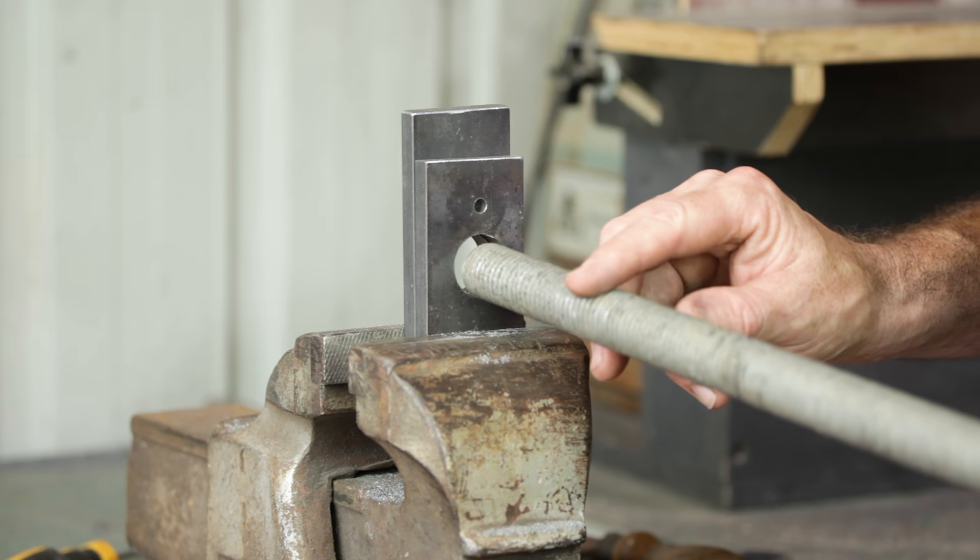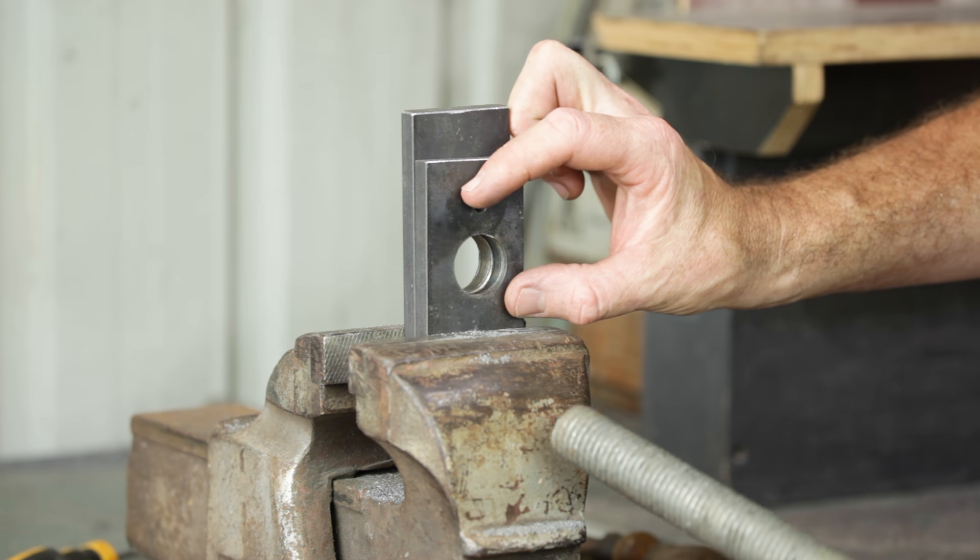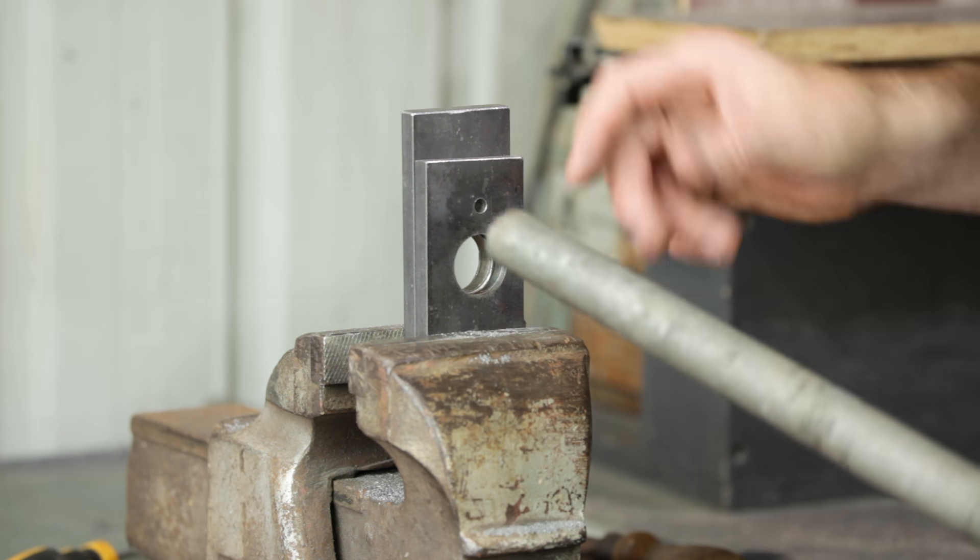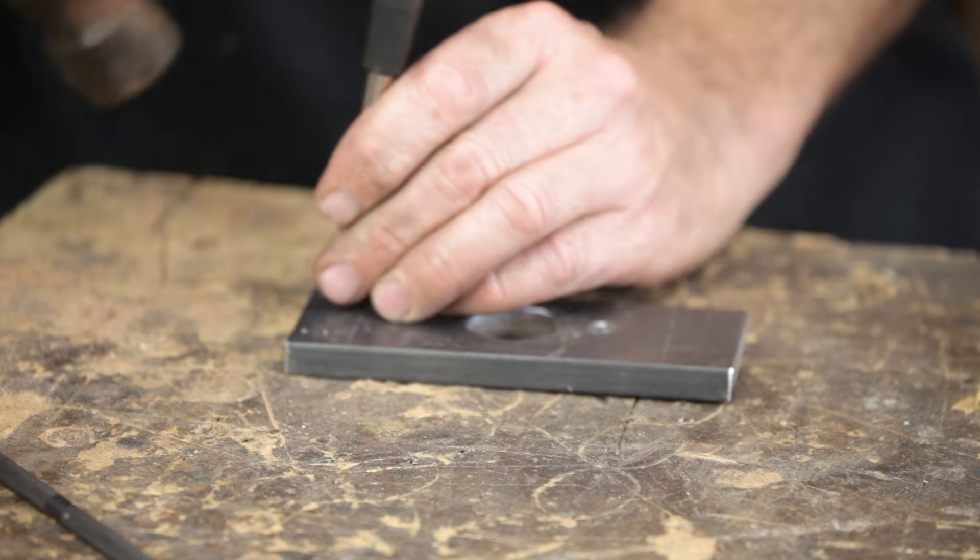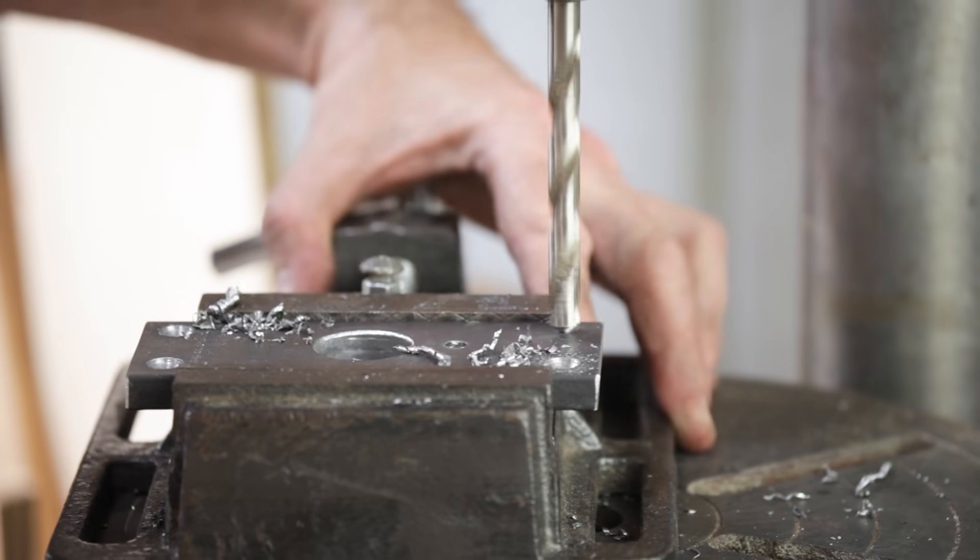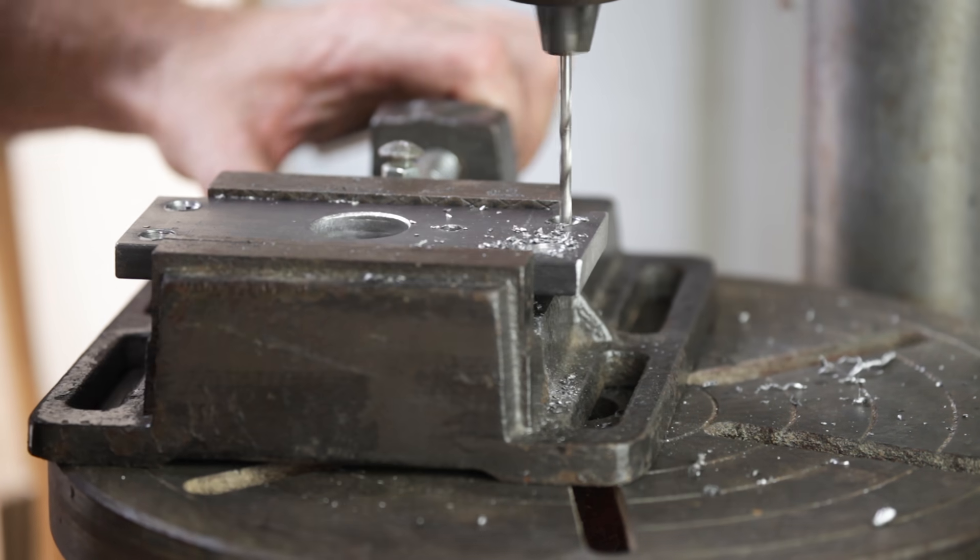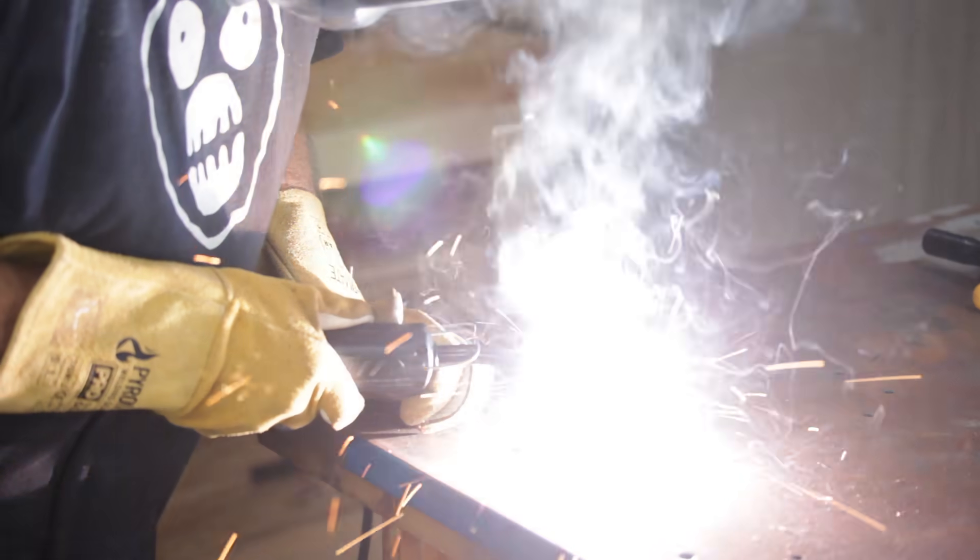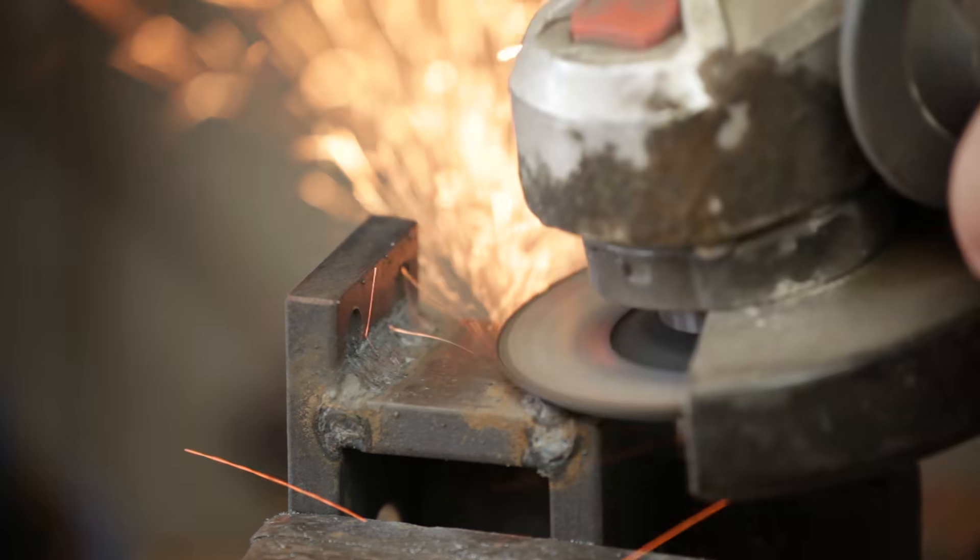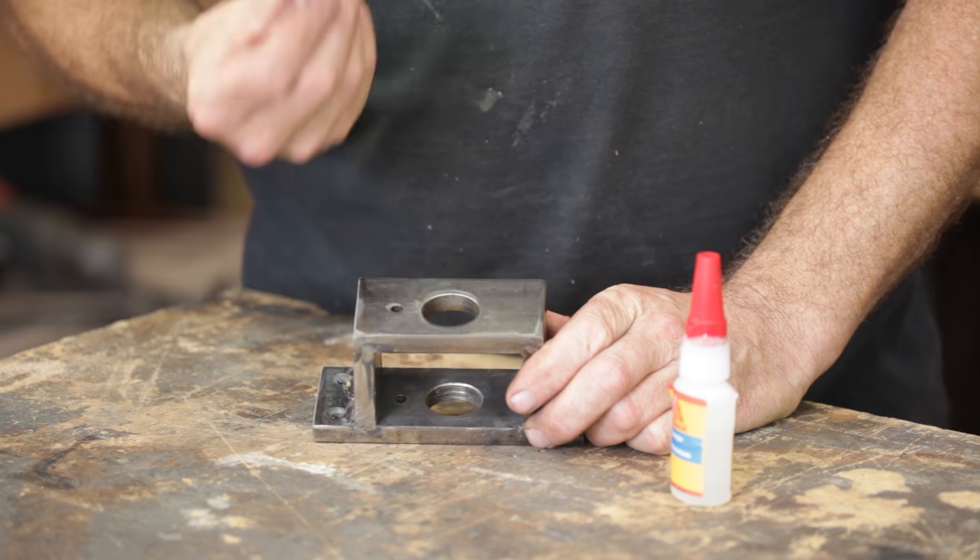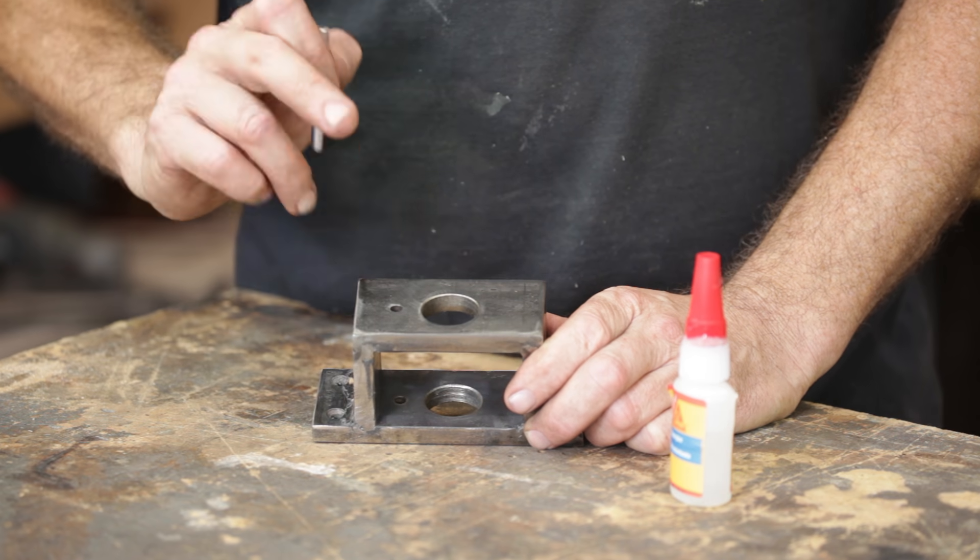So the threaded rod needs to go through the holes in the housing fairly freely. The threaded rod was 24mm and the nearest hole saw I had was 25mm. The next size up was 32mm which would be too big. Even though this goes through, I'm going to just file it out a little bit more. I'm going to glue the bar into the housing rather than weld it in, and that's in case the bar ever bends. I don't think it will, but if it does I'll be able to heat this up and knock it back out.